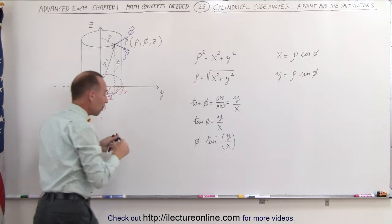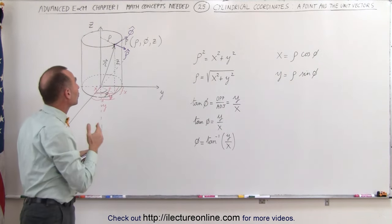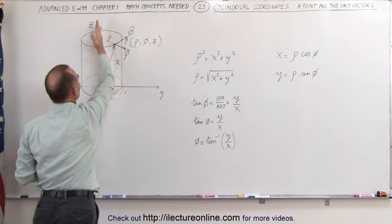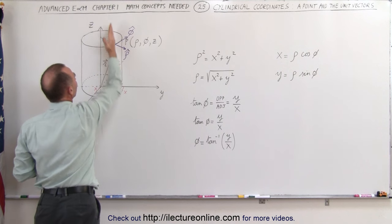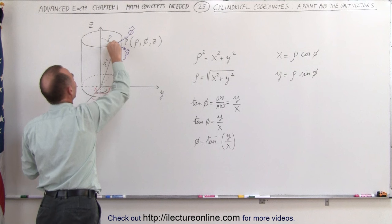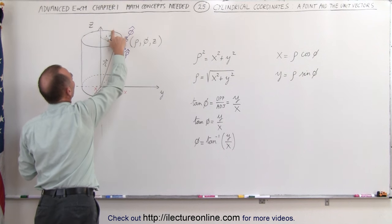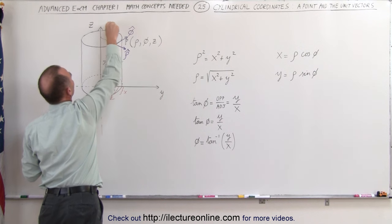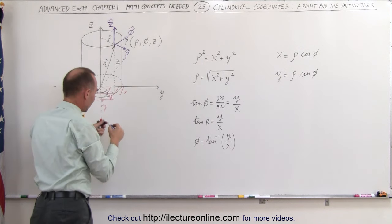And finally, we want to draw the unit vector in the direction of the z-axis. Well, relative to this point, the z-axis is in this direction. Therefore, the unit vector in z would be straight up, or parallel to the z-axis. There we go. A little bit better. There's my unit vector in the z-direction.